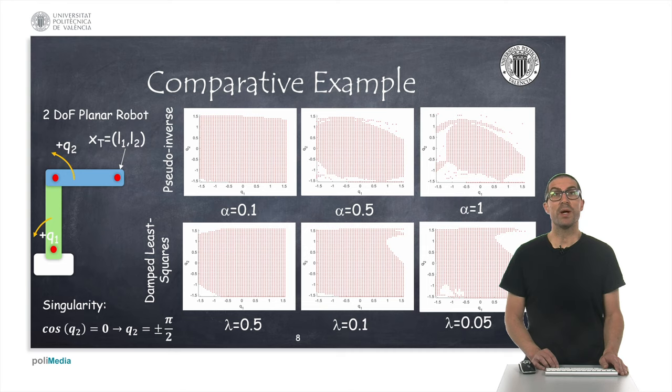Here, we show a comparative analysis between the two methods described, the pseudo-inverse and the damped least squares method. The objective is to see if the methods are able to converge to the final configuration given a final reference position.